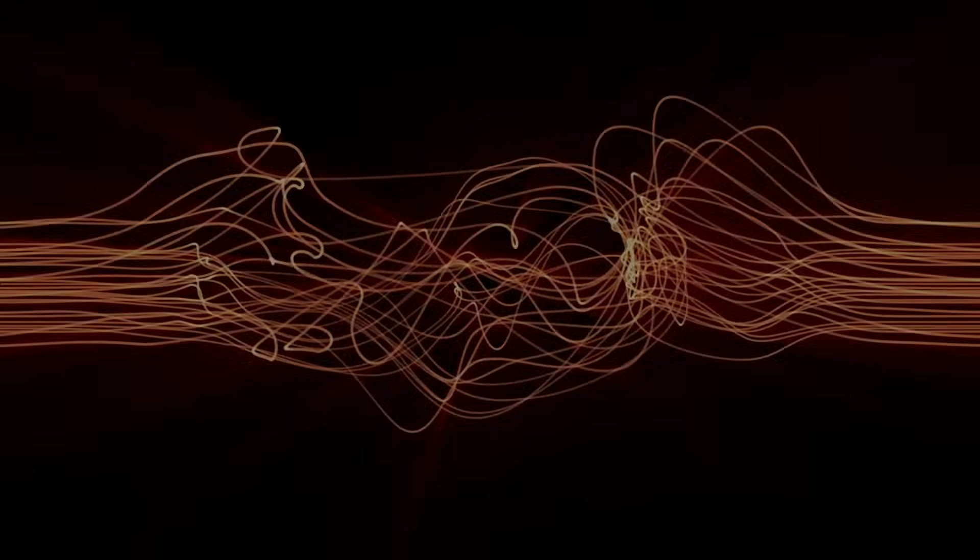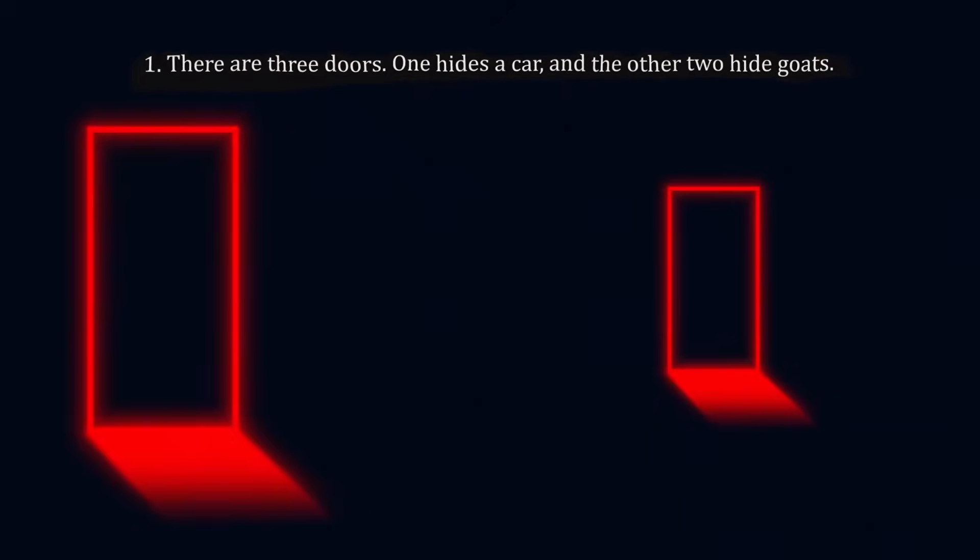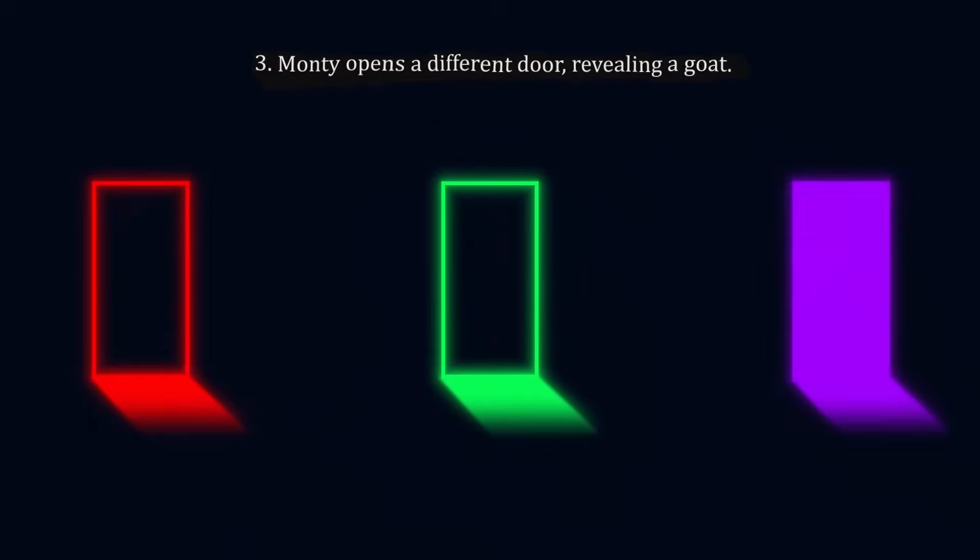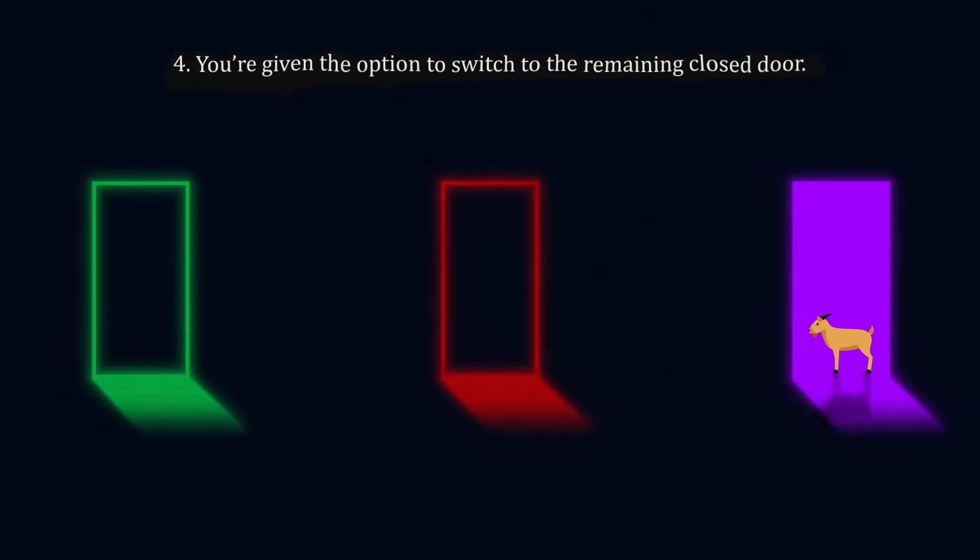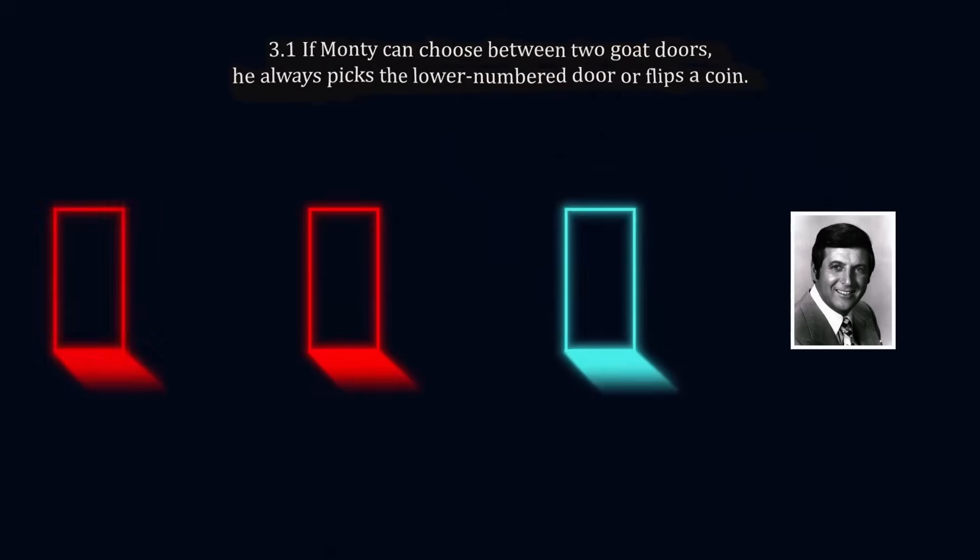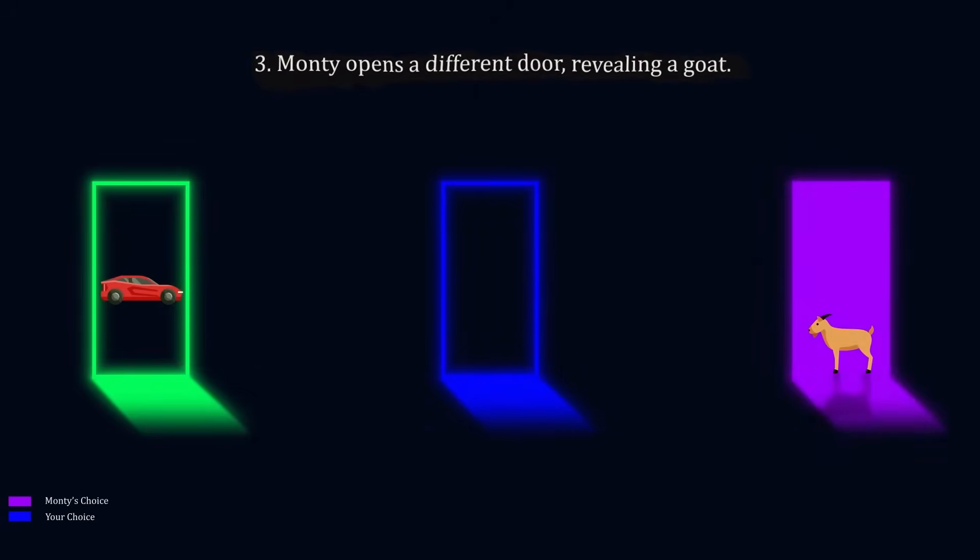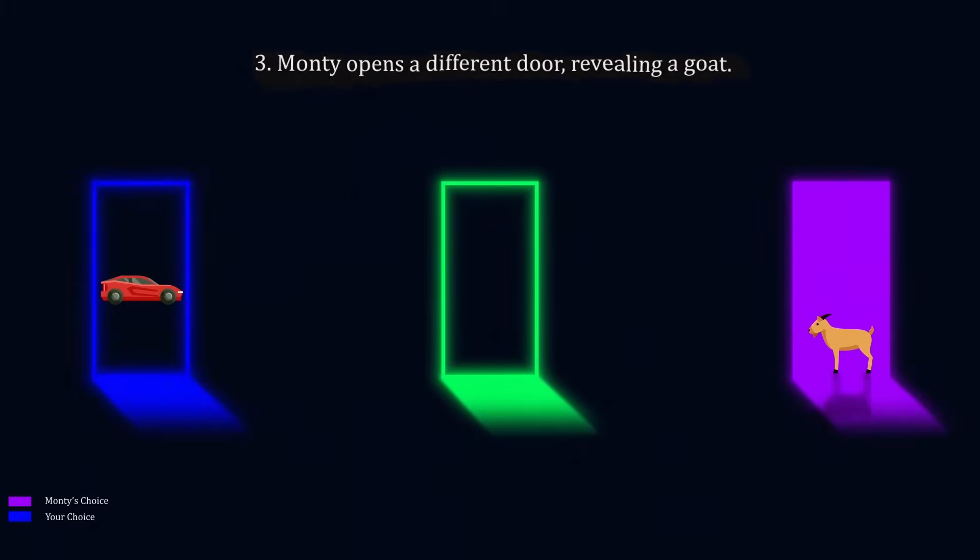To do that, you need to understand the game's strict rules. One, there are three doors. One hides a car, and the other two hide goats. Two, you pick a door. Three, Monty opens a different door revealing a goat. Four, you're given the option to switch to the remaining closed door. In this version, Monty is essentially a robot. The critical piece is that Monty knows where the car is and always opens a door with a goat that isn't yours. That's the key to why switching is the better move.